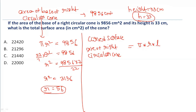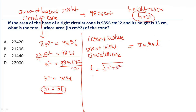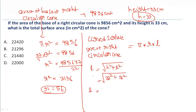We don't know the value of l. The height and radius form a right-angle triangle in a right circular cone, so l = √(h² + r²). Height is 33, so 33², and radius is 56, so 56². Solving this, the value of l is equal to 65 cm.